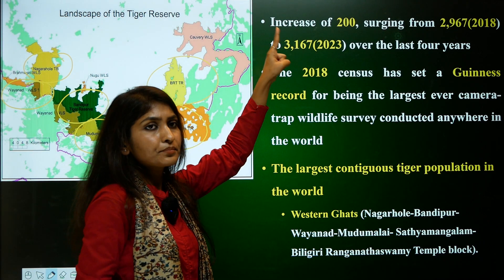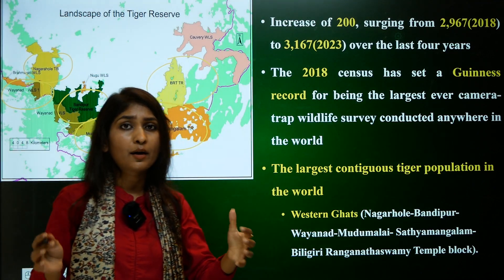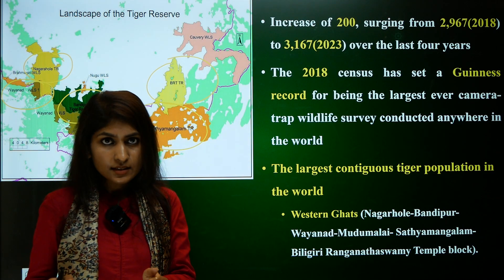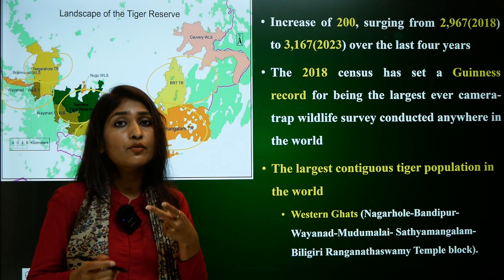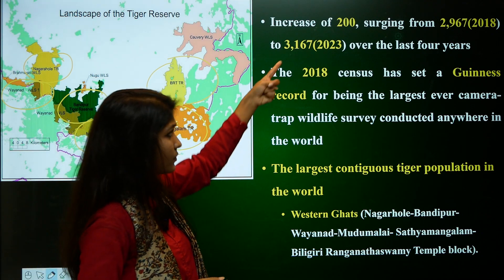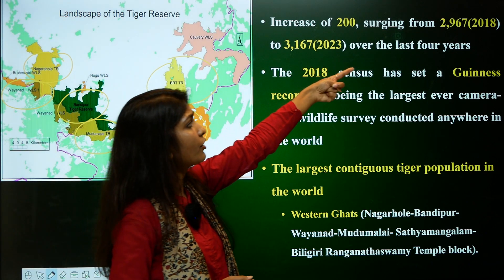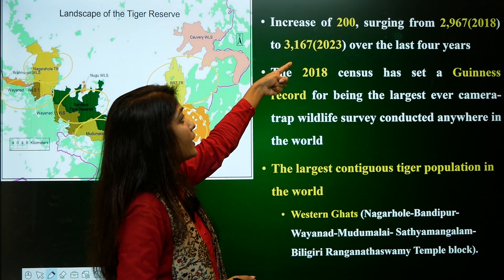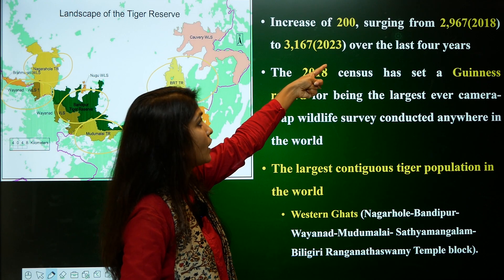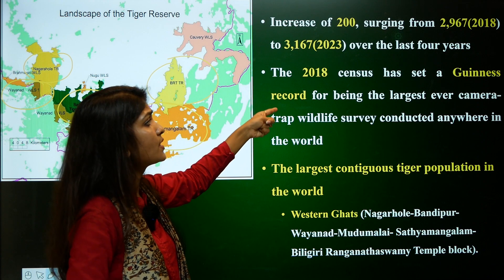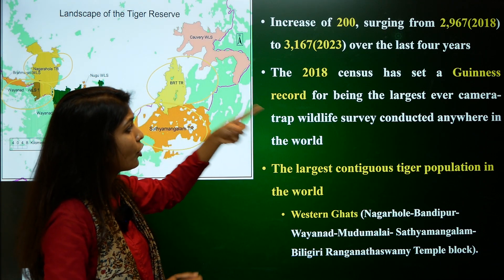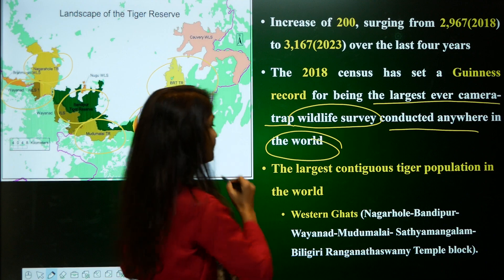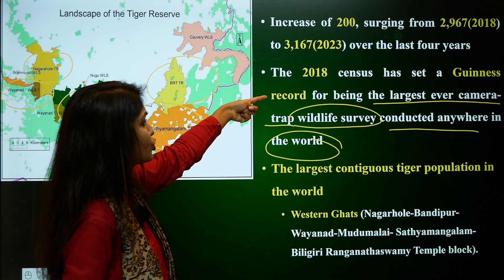From the fourth to the fifth tiger census — 2018 to 2022 — there was an increase of 200 tigers: from roughly 2,967 in 2018 to 3,167 in 2023. The 2018 census set a Guinness World Record for being the largest ever camera trap wildlife survey conducted anywhere in the world.